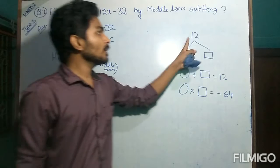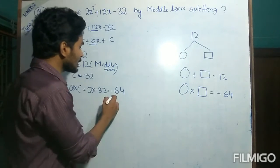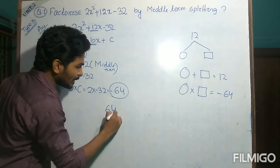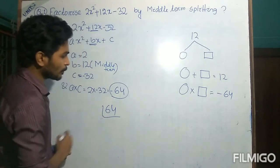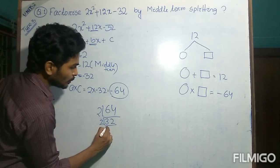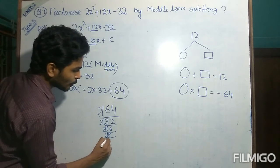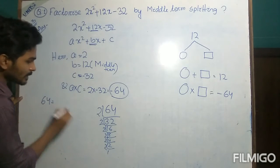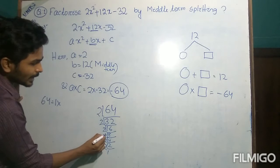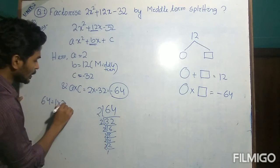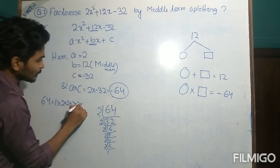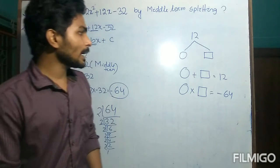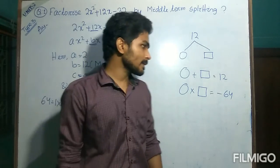We have to split this middle term 12 into two parts so that they will add to give 12 and multiply to give minus 64. In order to split it, we have to factorize 64. Forget about the negative sign. Factorizing 64: 2 into 32; 2 into 16; 2 into 8; 2 into 4; 2 into 2 into 1. So 64 equals 2 to the sixth power. Among these numbers, we have to choose a pair that adds to give 12 and multiplies to give minus 64.